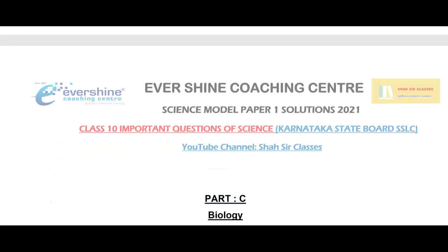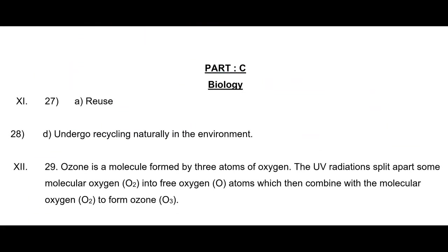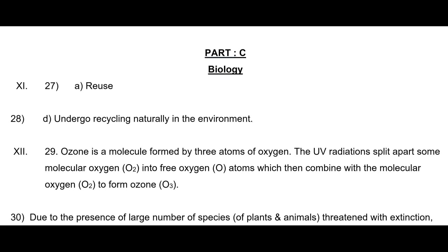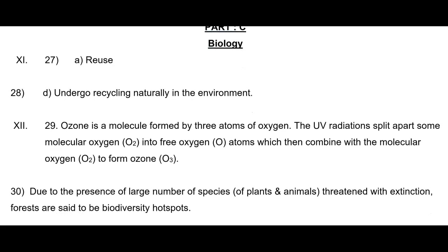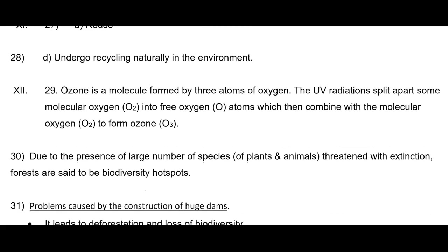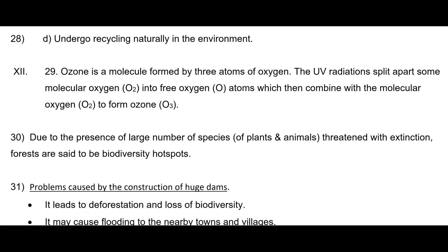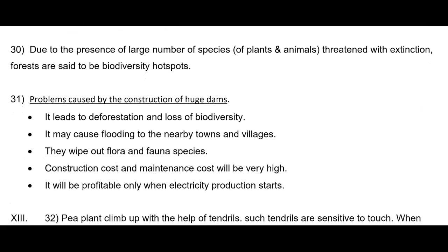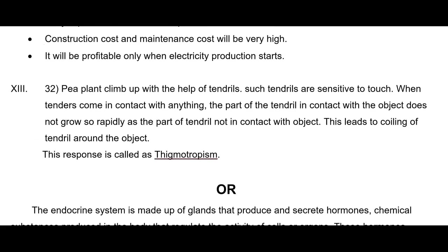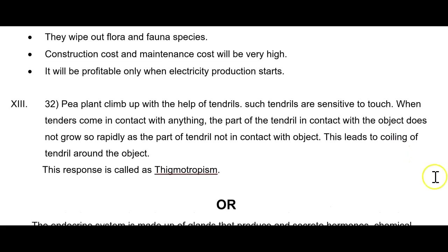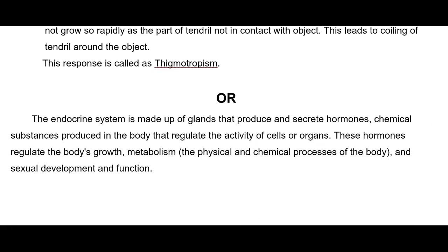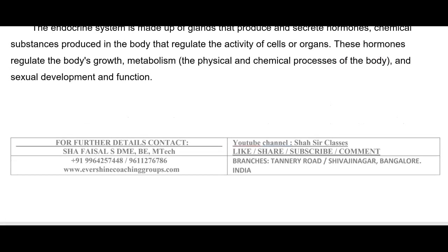I hope you have understood the class. Now we are solving Part C — Biology. As you can see here, the answers are on the screen. This is question number 31 and this is question number 32 — there is a choice. This response is called thigmotropism. And there is a choice here. We have done even the choice question and we have solved it.